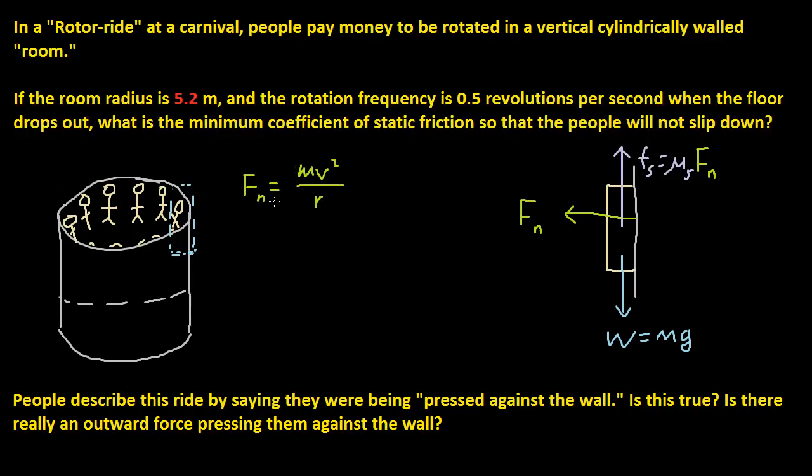And since mv squared over r is equal to the normal force, we can plug this into this equation because we're trying to get this mu of s. So we're going to get force of friction equals mu of s times mv squared over r. I'm just plugging this in, taking this and plugging it into this part right here.